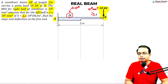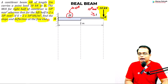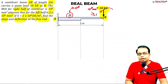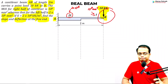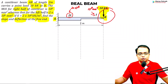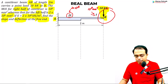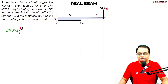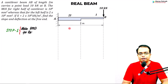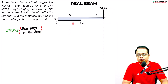We have also been given the Young's modulus, and what we need to do is find the slope and deflection at the free end, that is at point B. The first step is to make a bending moment diagram for the real beam.